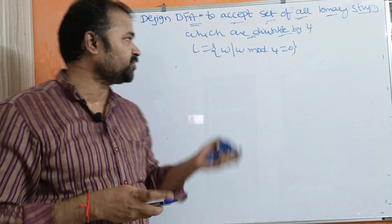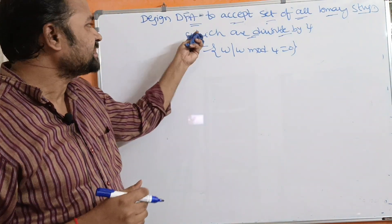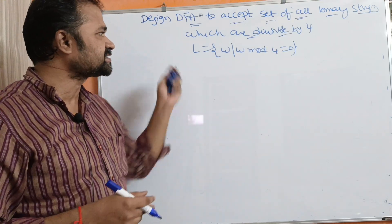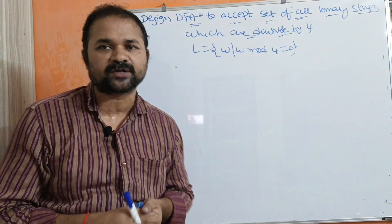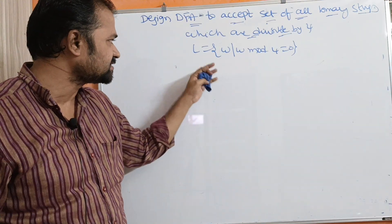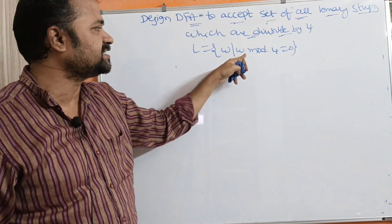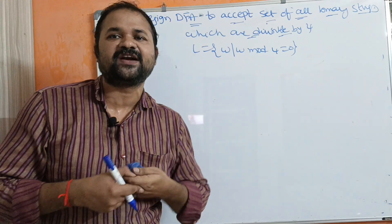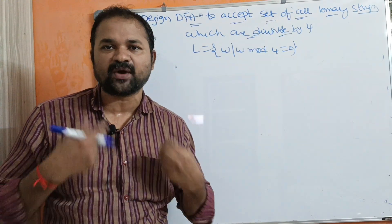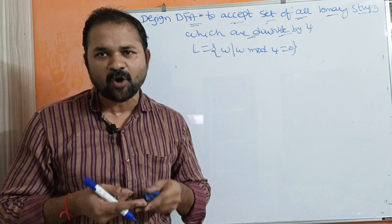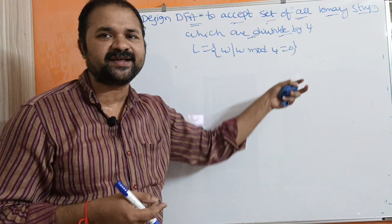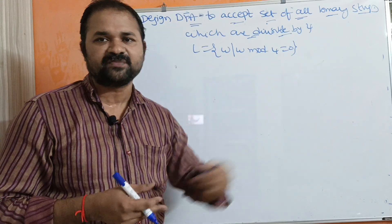Let's see this example. Design a DFA to accept the set of all binary strings which are divisible by 4. The language is given as L = {W | W mod 4 = 0}. We know what a binary number is — it is a combination of 0's and 1's. Let us represent binary numbers from 0 to 7.